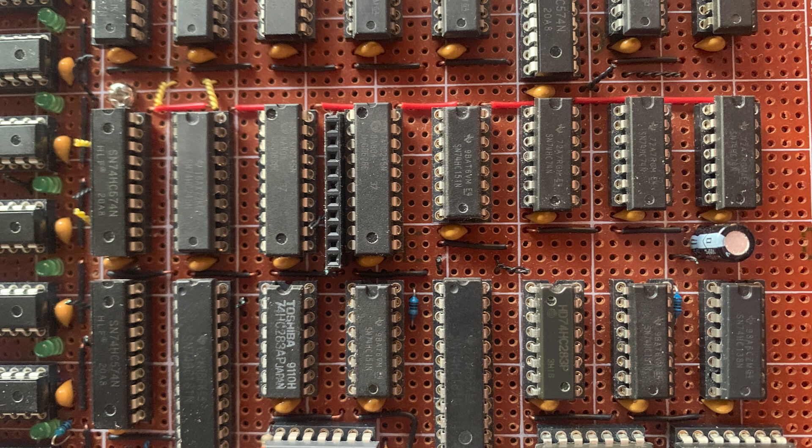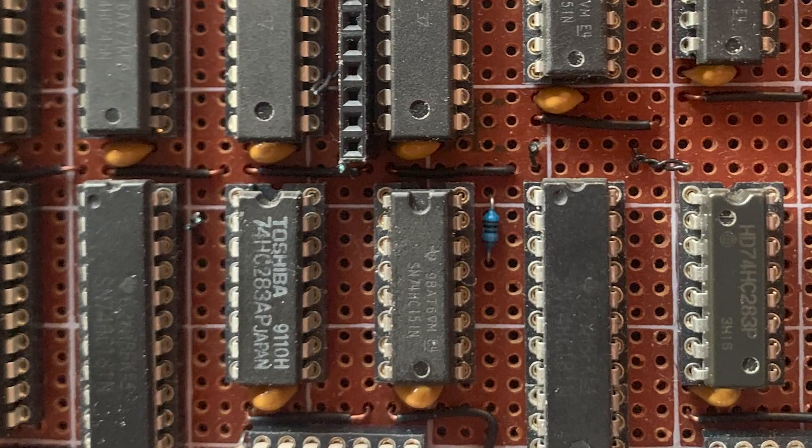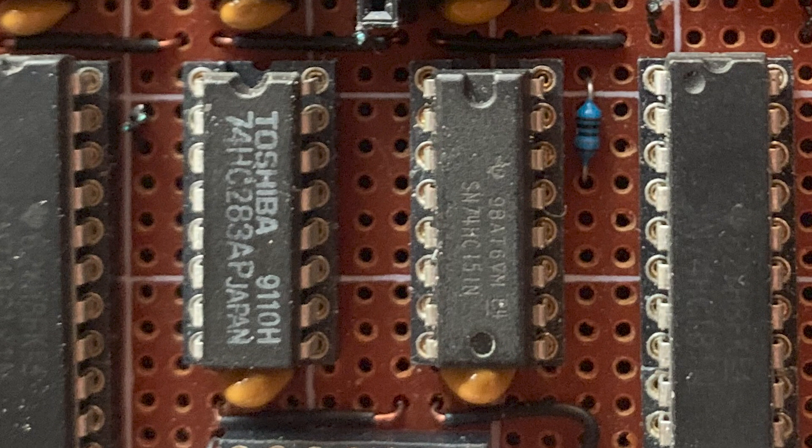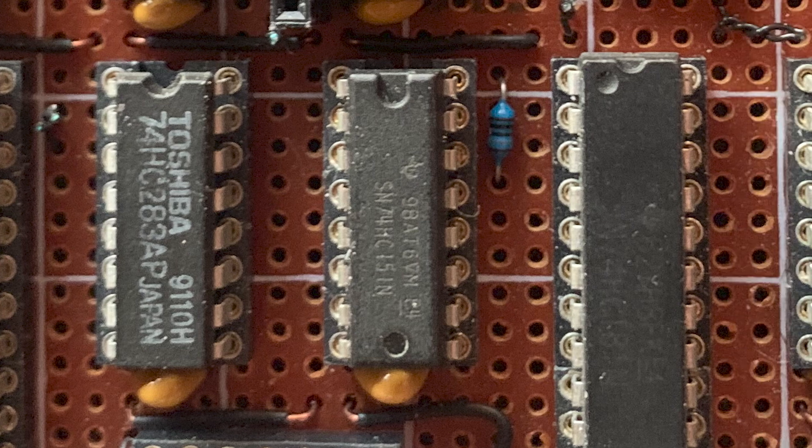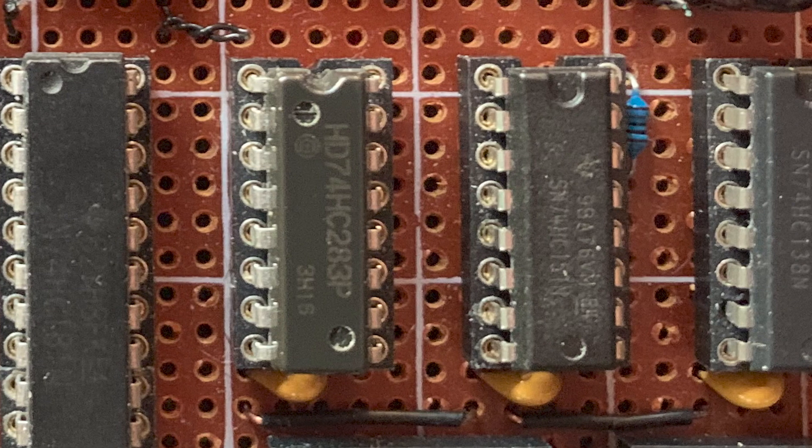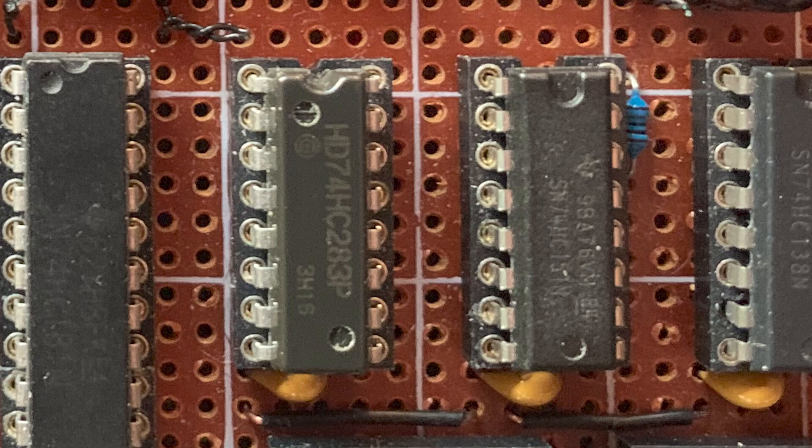I actually built this hardware into the ALU at the start. So you can see this 74HC283 and 74HC151 here. This is for the lower nibble, and this is for the upper nibble. I connected it up, and bad Pac-Man.